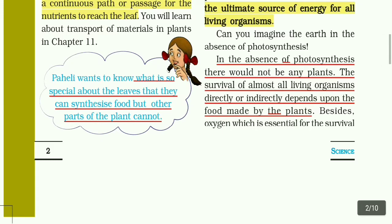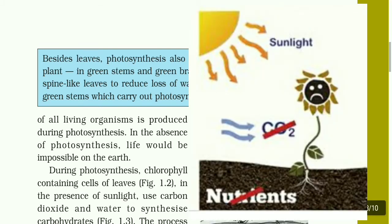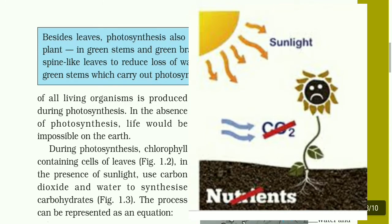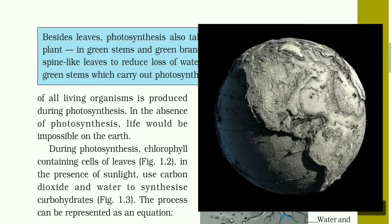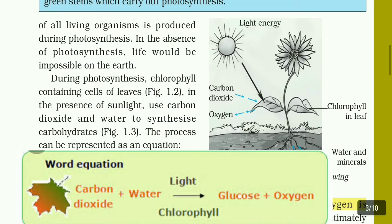In the absence of photosynthesis, there would not be any plants. The survival of almost all living organisms directly or indirectly depends on the food made by plants. Besides, oxygen — which is essential for the survival of living organisms — is produced during photosynthesis. The chlorophyll-containing cells of leaves, in the presence of sunlight, use carbon dioxide and water to synthesize carbohydrates. This process can be represented as an equation: carbon dioxide + water, in the presence of sunlight and chlorophyll, gives carbohydrates and oxygen.